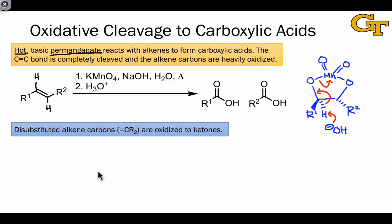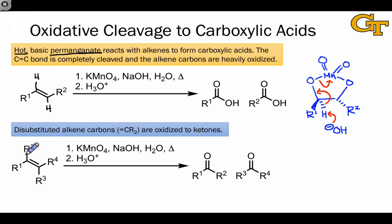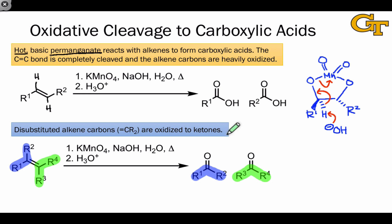Disubstituted alkene carbons, CR2, are oxidized to ketones. These can't form carboxylic acids because that would require the breaking of a carbon-carbon bond. For example, here we have a tetrasubstituted alkene with four R groups attached to the carbons of the double bond. R1 and R2 end up in one of the ketones, while R3 and R4, which are both linked to a common carbon in the alkene starting material, end up in the other ketone. It's essentially as if two oxygen atoms have jammed their way between the carbons of the alkene, forming two new carbon-oxygen double bonds.